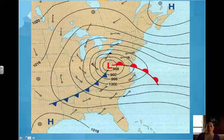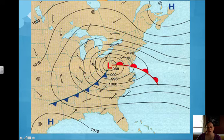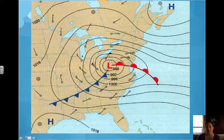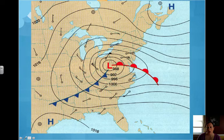Here's an example of station models on a weather map. You can see the station models showing wind direction — the direction the wind is coming from. On this side they're coming from the north, blowing this way. Down in this section, they're all coming from the southwest, blowing this way.